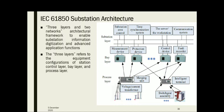The IEC 61850 substation architecture consists of three layers and two networks, providing an architecture framework to enable substation information digitization and advanced application functions. The three layers are: the station control layer (substation layer), the bay layer, and the process layer. In the process layer you can see merging units, voltage and current transformers, switch gear assemblies, and intelligent terminals. The bay layer includes measurement devices, protection devices, control devices, and fault recorders. The substation layer includes area control, time synchronization, servers, workstations, and communication systems.